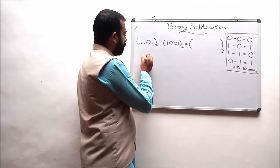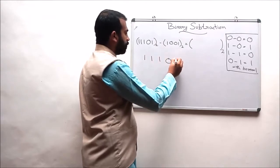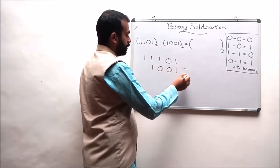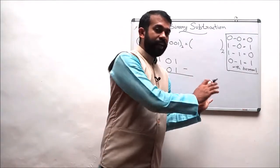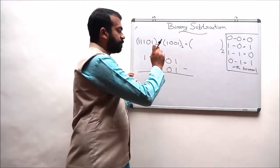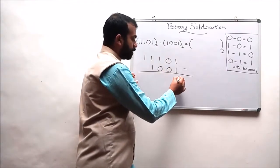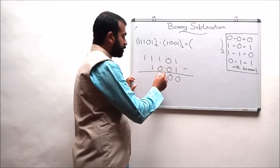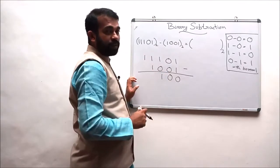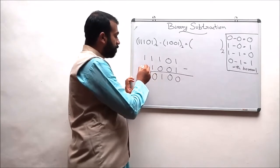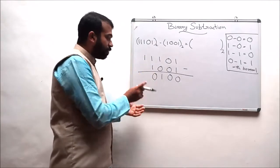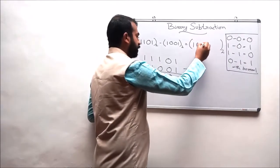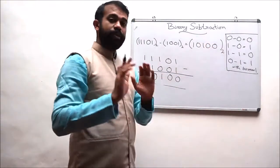We write 1-1-1-0-1 and subtract 1-1-0-0-1. The subtraction operation is performed from the LSB position. 1 minus 1 results in 0; 0 minus 0 results in 0; 1 minus 0 results in 1; 1 minus 1 results in 0; and finally 1 minus 0 results in 1. So the final answer is 1-0-1-0-0 to the base 2.